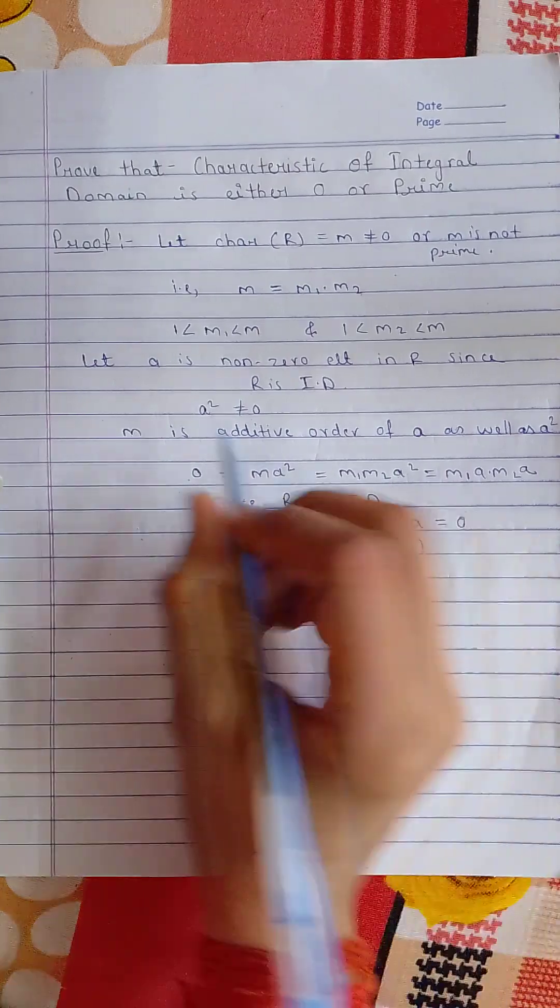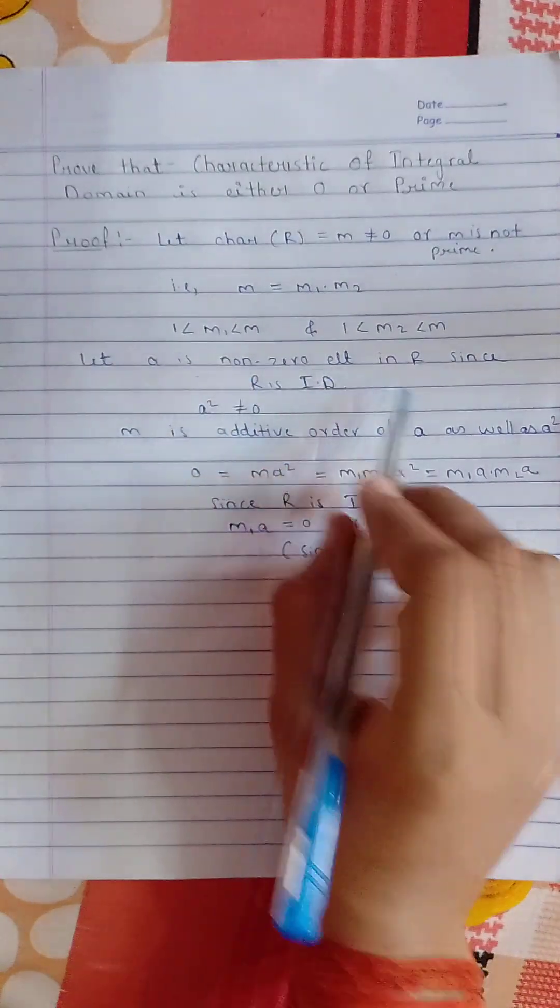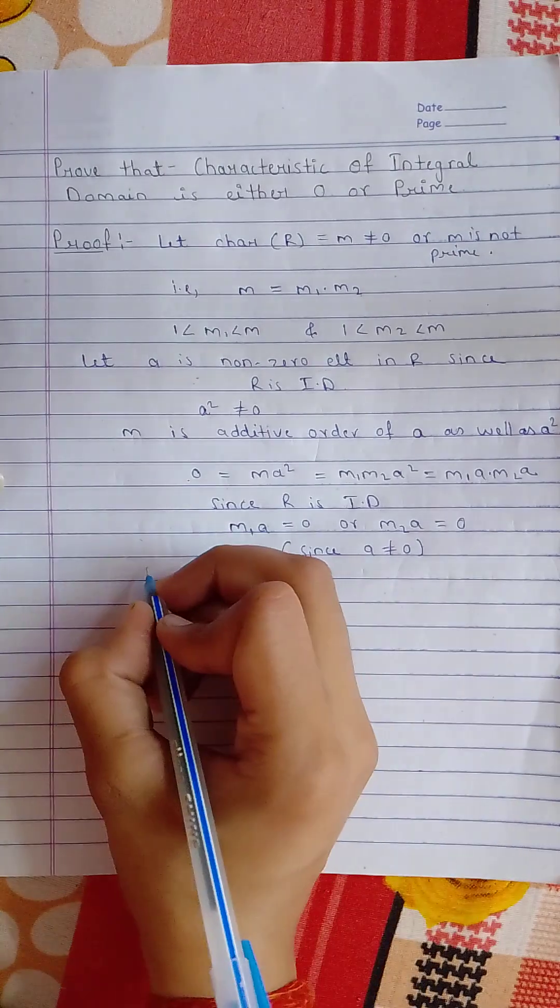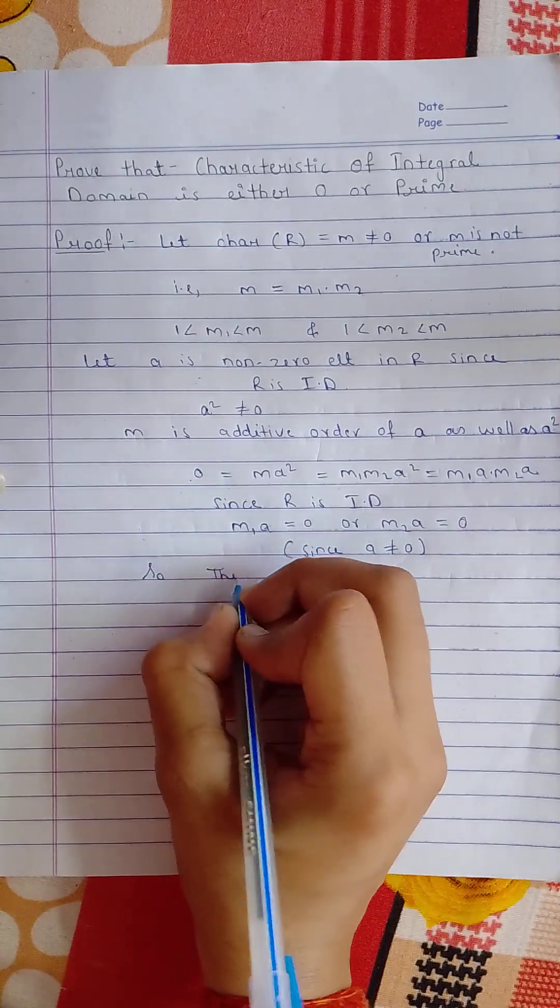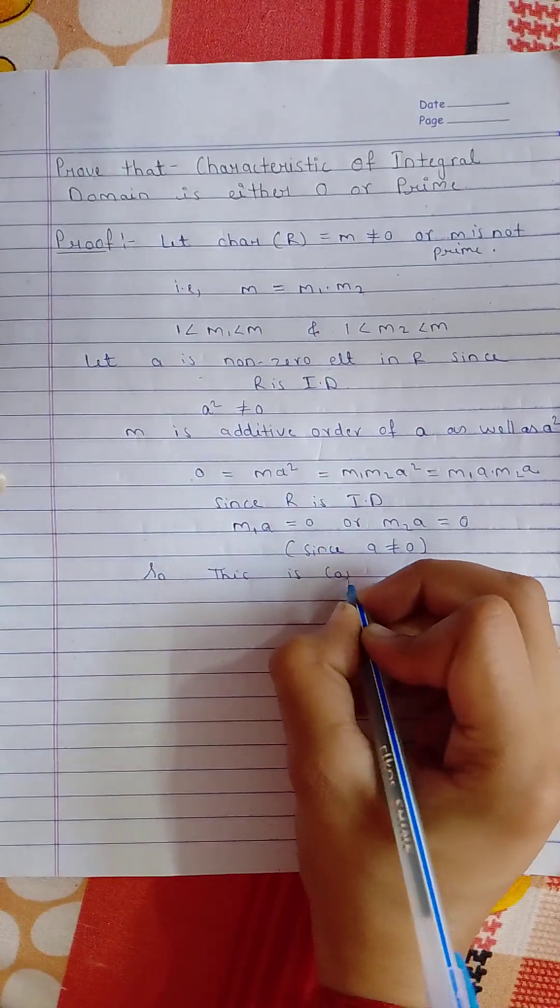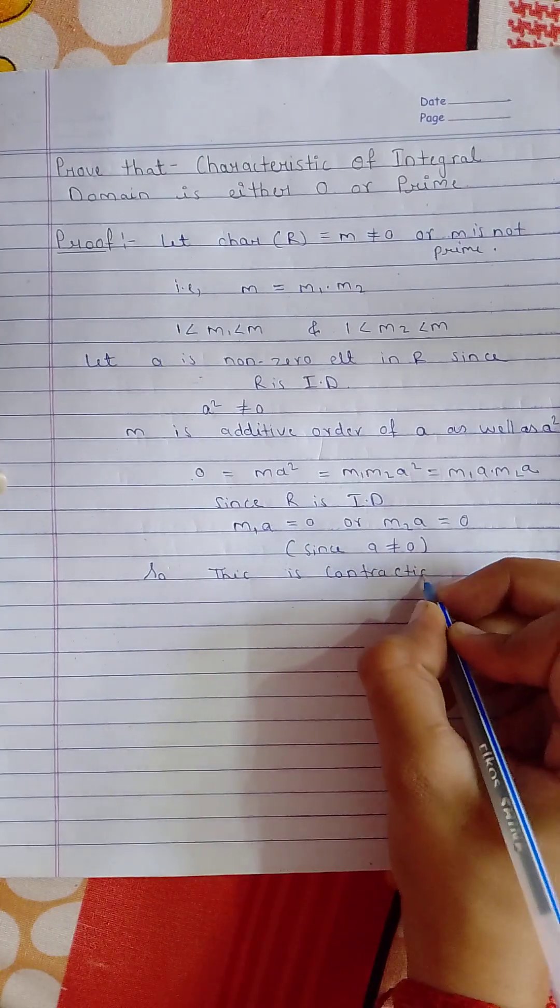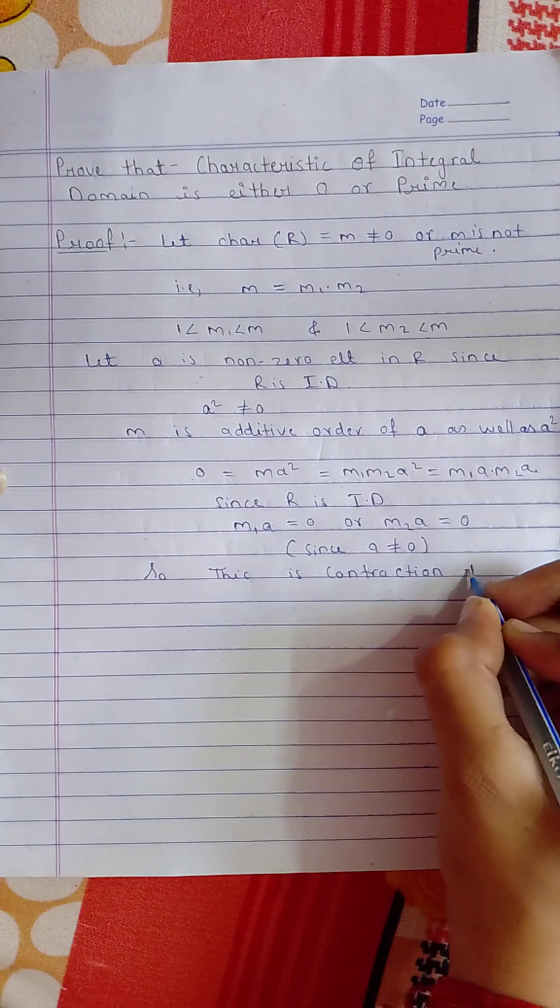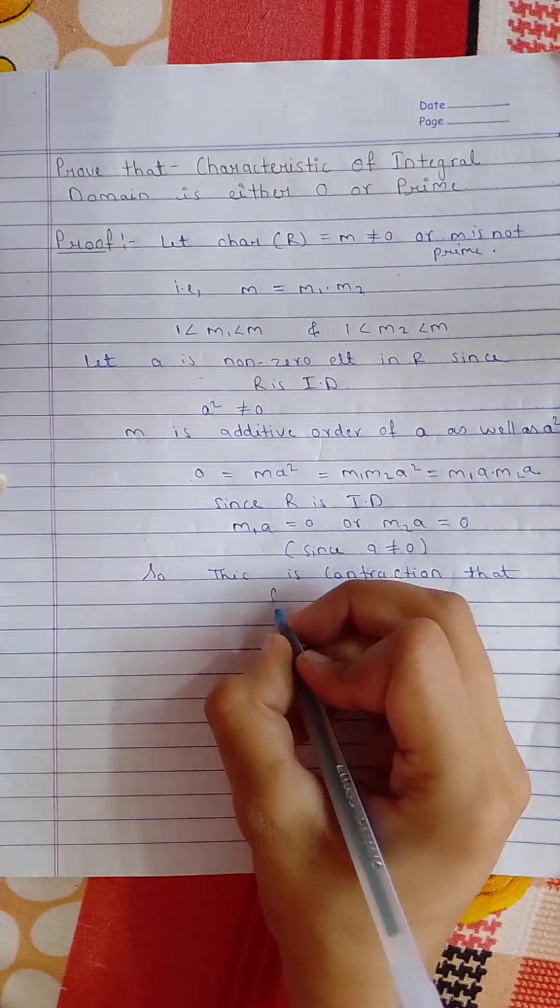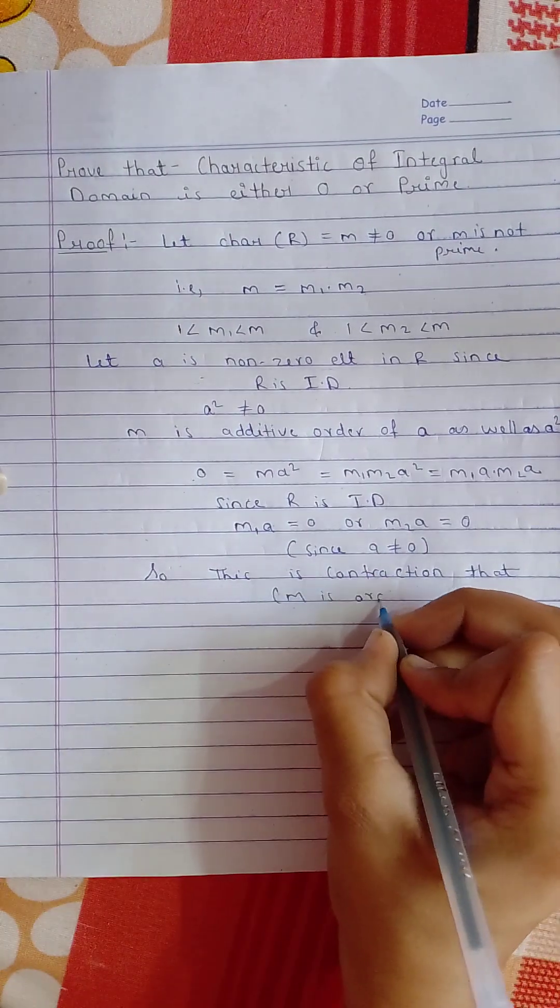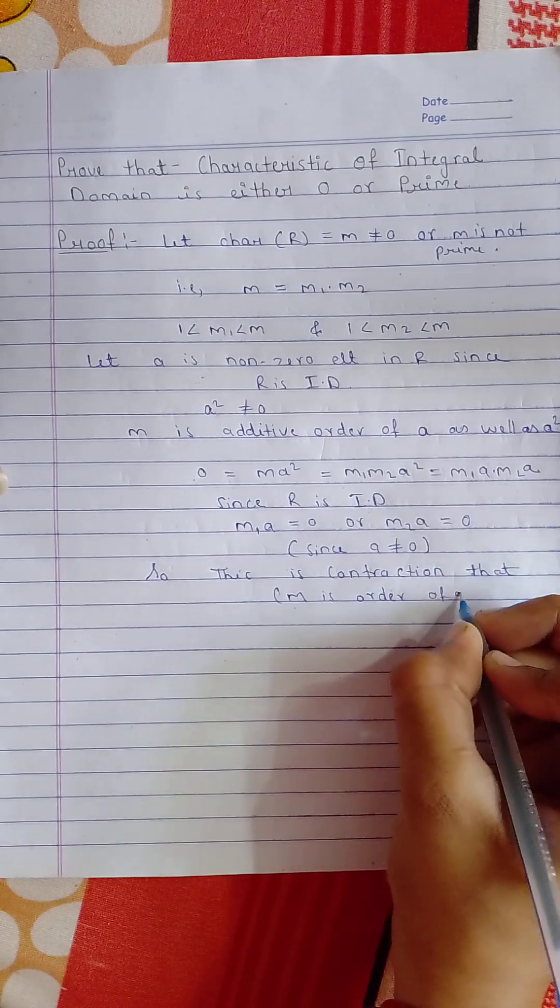We also know that a is not equal to 0 by our assumption that a is a non-zero element. This is a contradiction, since m was the order of a. Thank you.